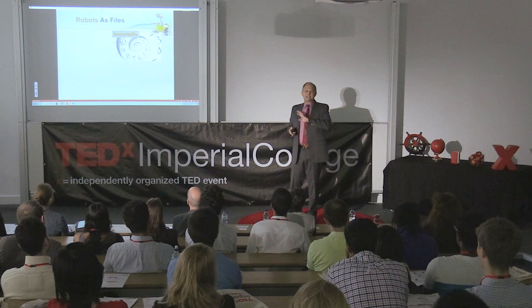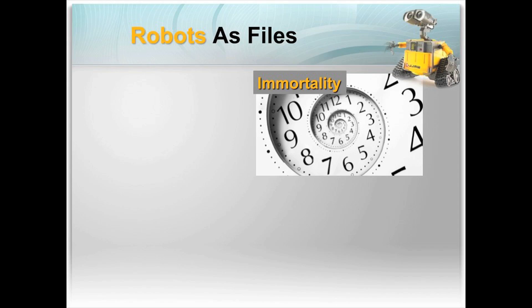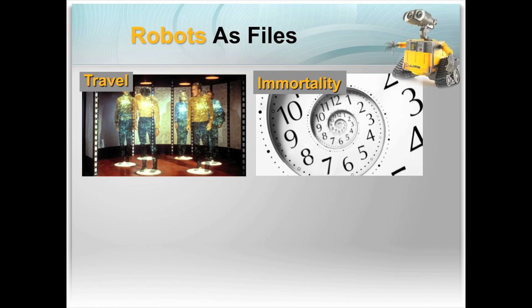The first set of implications apply to any robot-dominated future. The key idea is that robots can be represented as computer files. You can make a computer file immortal — you can archive it. Just like cars and houses could be immortal if you keep repairing them, they may not actually be, but they could be. Travel can be done electronically: you send the file over a communication line, taking it out of the robot body, sending it across the world, and downloading it into a new body.